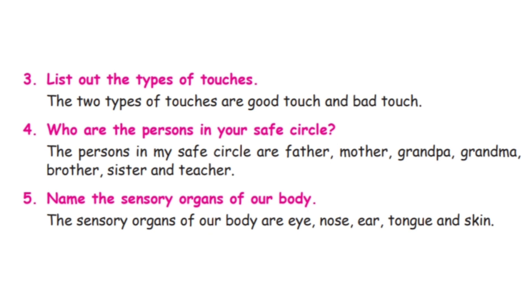Third, list the types of touches. The two types of touches are good touch and bad touch. Fourth, who are the persons in your safe circle? The persons in my safe circle are father, mother, grandpa, grandma, brother, sister, and teacher.